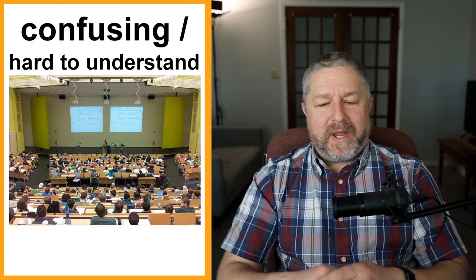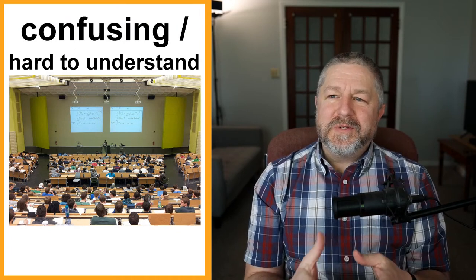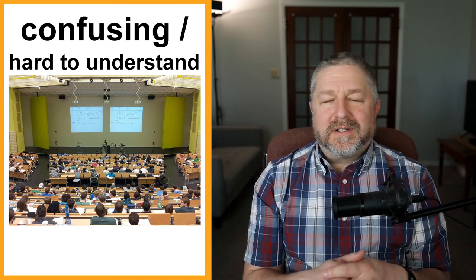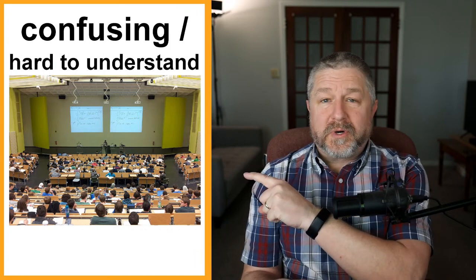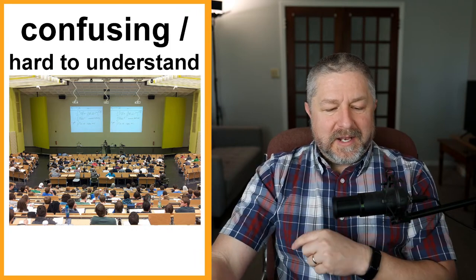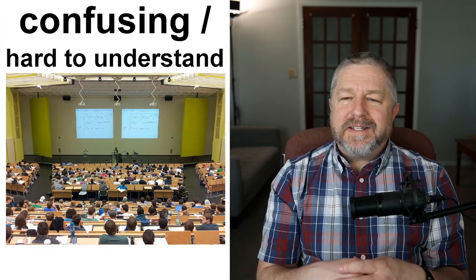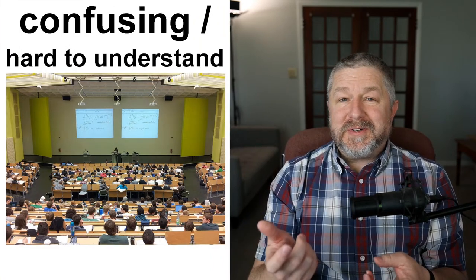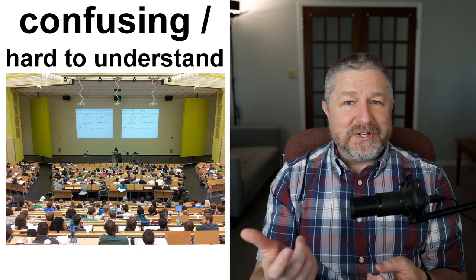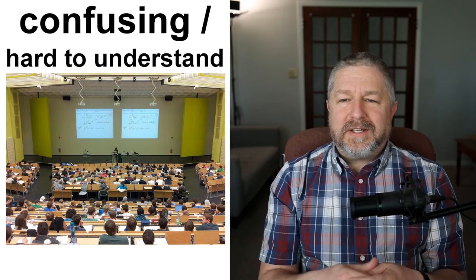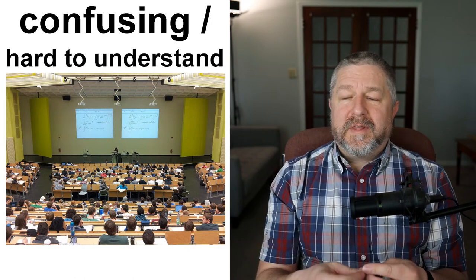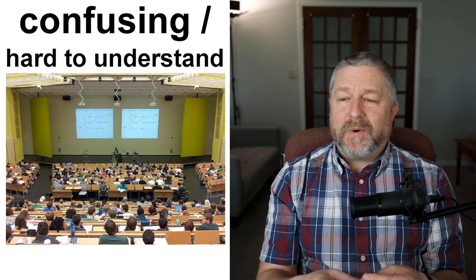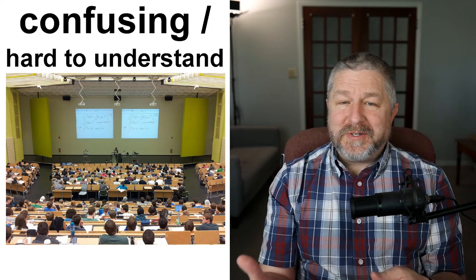Let's get this lesson started. One way to describe something is to say that it was confusing, but often we use the phrase 'hard to understand.' This is a huge classroom — probably at a university — and maybe the professor isn't very easy to understand. The professor is hard to understand. If someone said to you, 'How was the class that you went to today?' you could say, 'Oh, it was really confusing. The professor was hard to understand, or the class was hard to understand.'